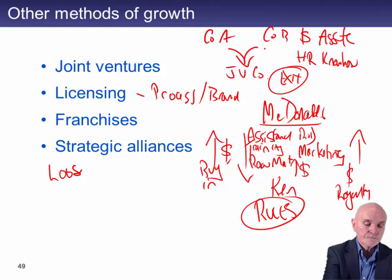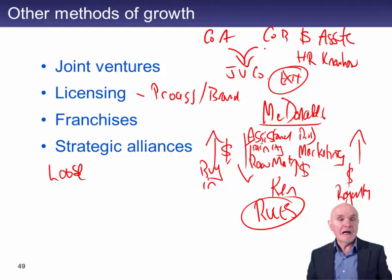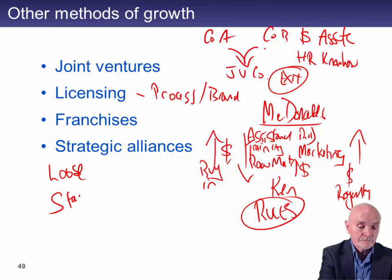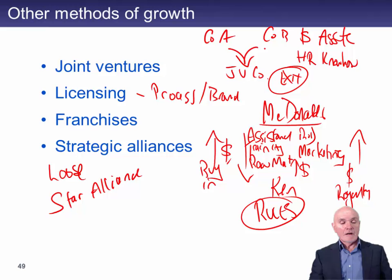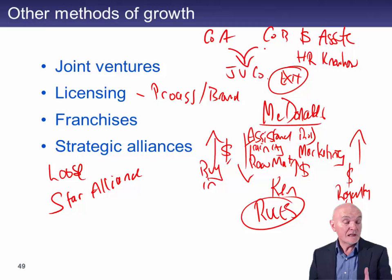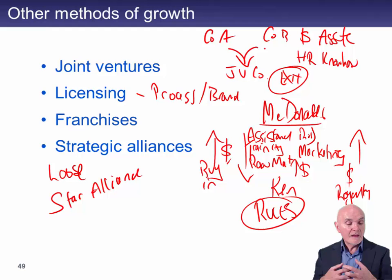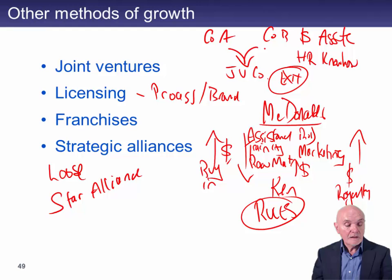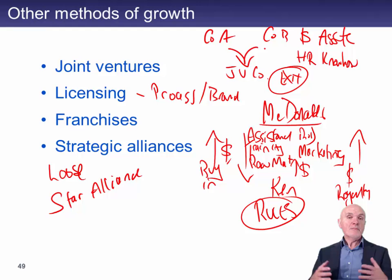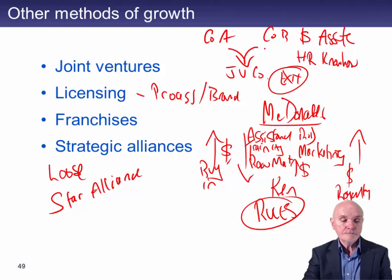Finally, we have strategic alliances — a very loose arrangement, really to cooperate. A good example is the airline strategic alliances, and indeed one is called Star Alliance. Star Alliance has Lufthansa, some Asian airlines, some American ones, and Air New Zealand. By cooperating, you can effectively service the world. Whereas if you were just Air New Zealand, your route network would be very constrained. In a strategic alliance there's no co-ownership — it is an agreement to cooperate so that all parties can present a better service to the public.